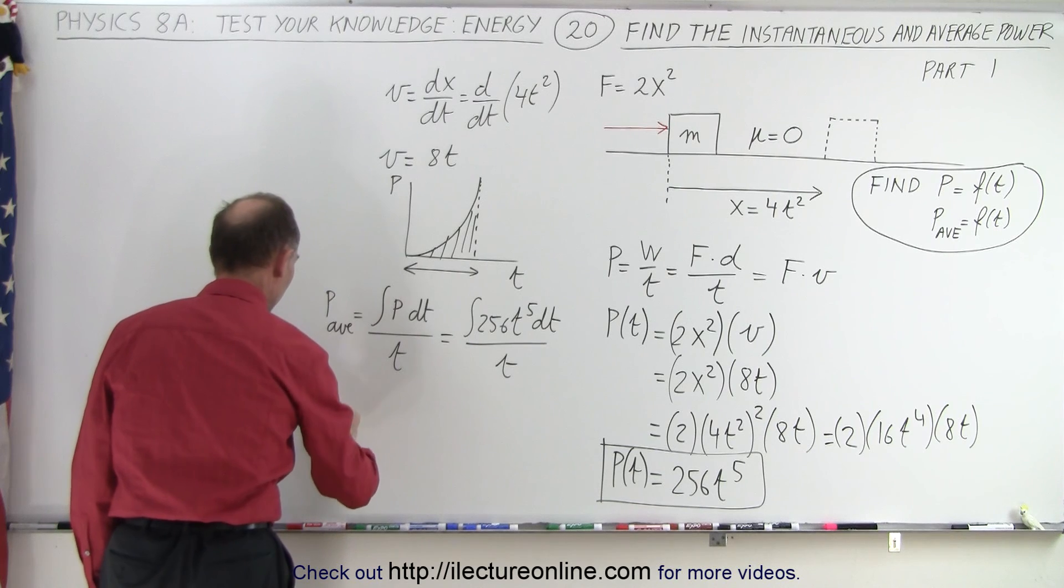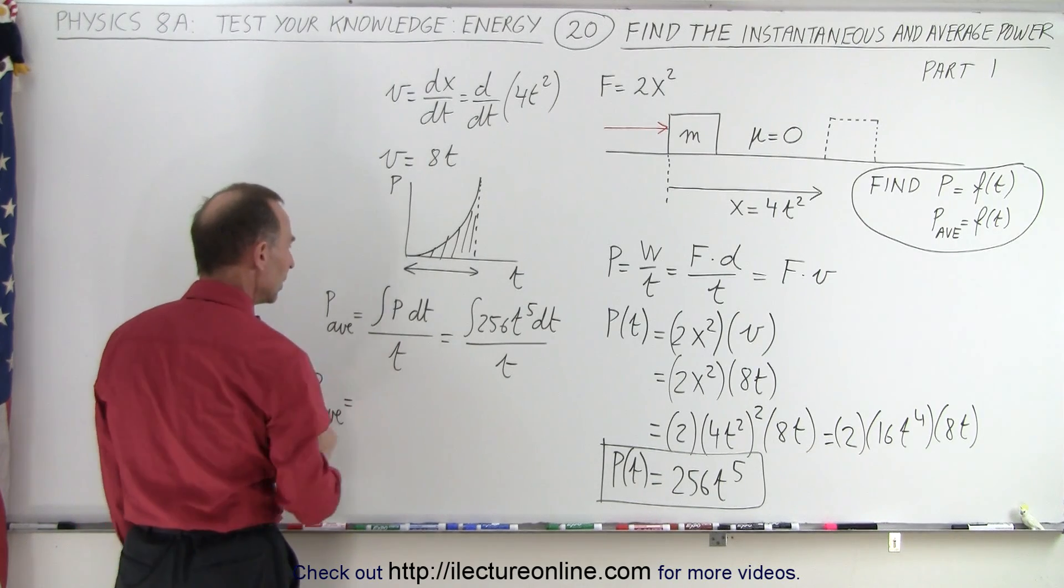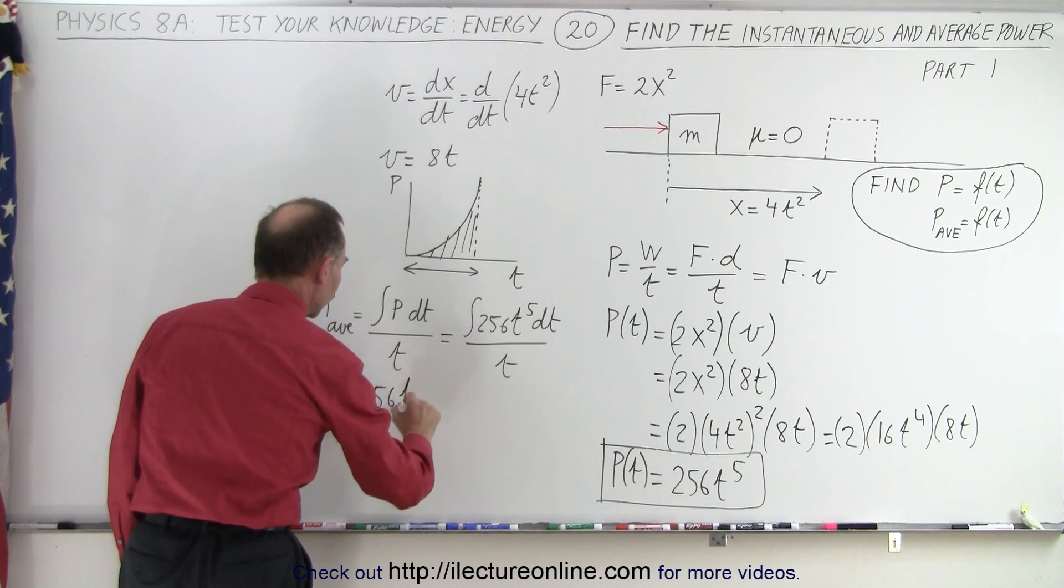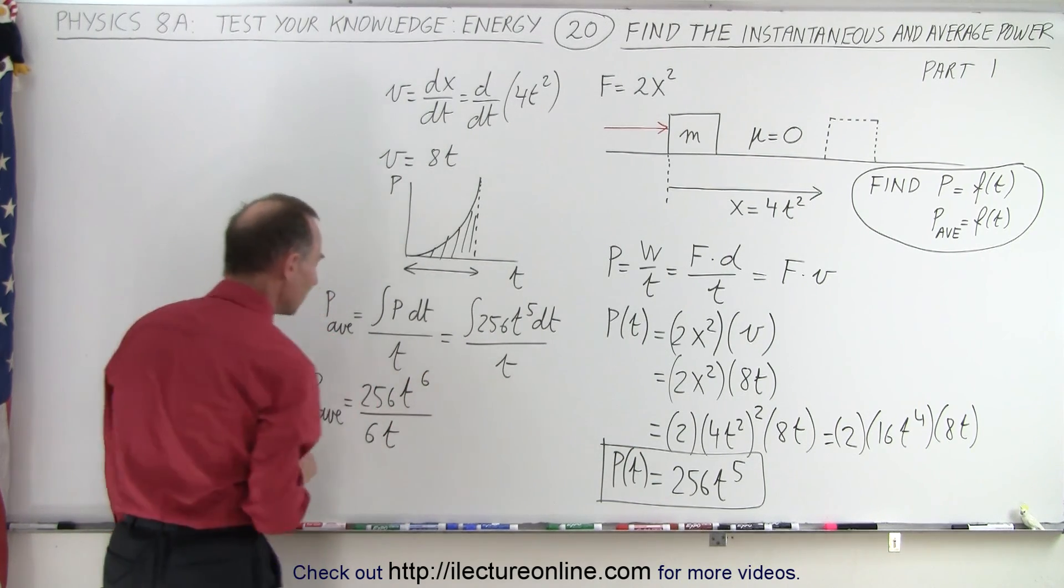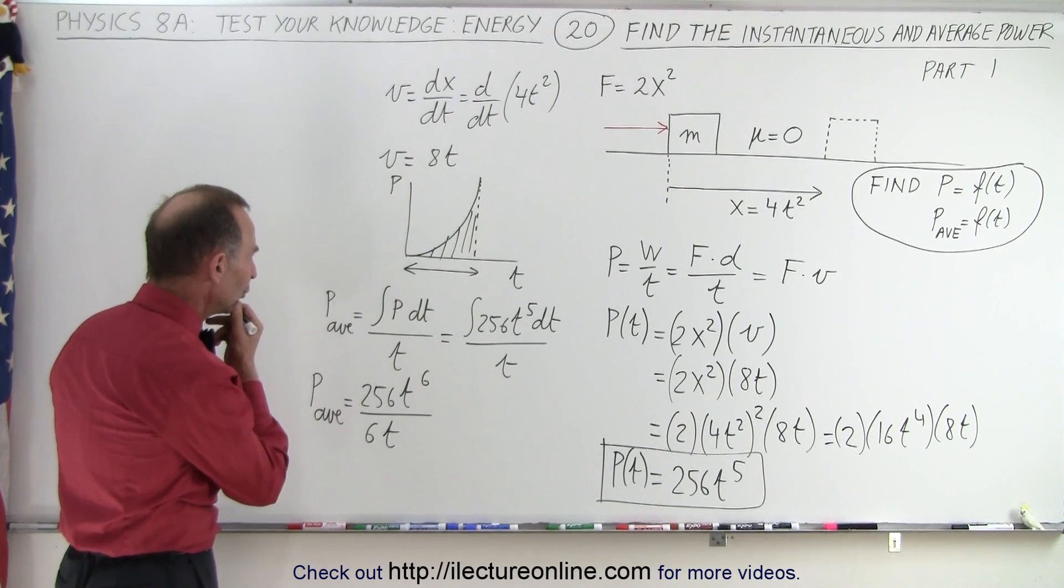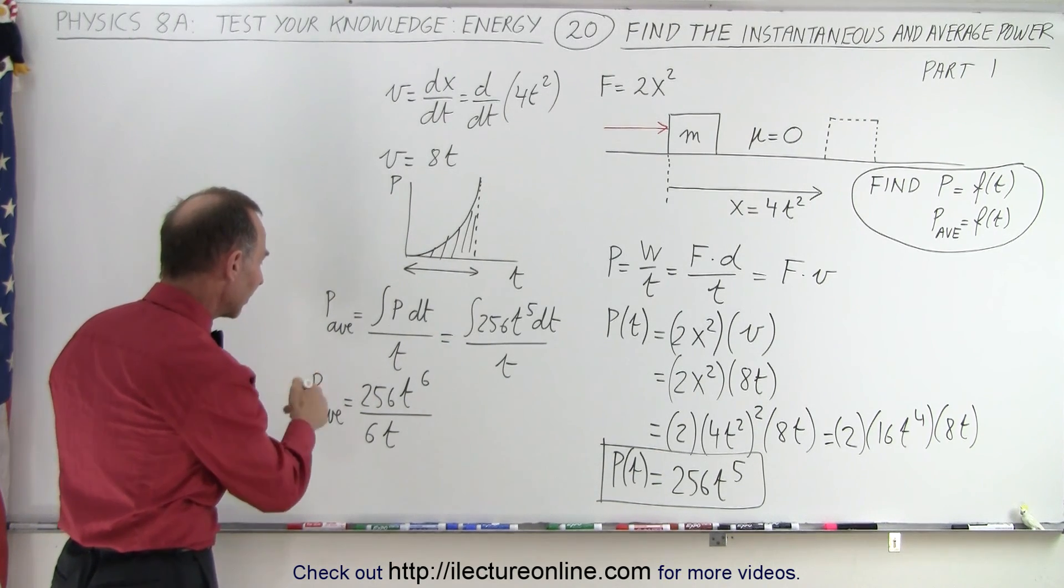And so the average power is going to be equal to 256t to the sixth power divided by 6 times t. And 256 divided by 6. Let's see here.